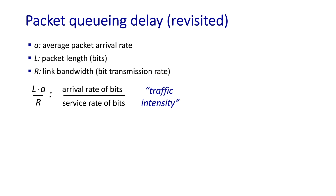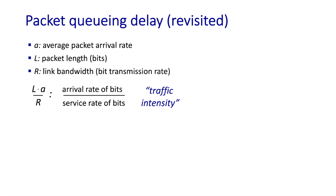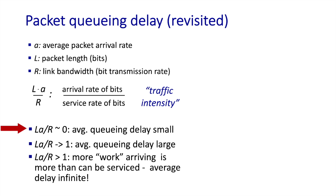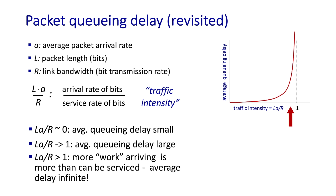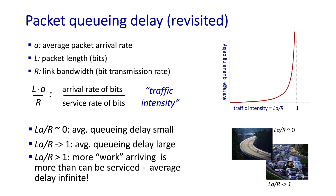Traffic intensity is the ratio of the amount of arriving work — the bits — to the system's capacity to do that work, that is transmit the bits. When the traffic intensity is low, that is L times A over R is small, there's seldom a queue. When L times A over R is greater than one, there's more work arriving on average than the system's capacity, so delay is infinite — the backlog just gets larger and larger over time. The graph shows average queuing delay as a function of traffic intensity. Note that when traffic intensity gets close to 1, delays get very large very fast.